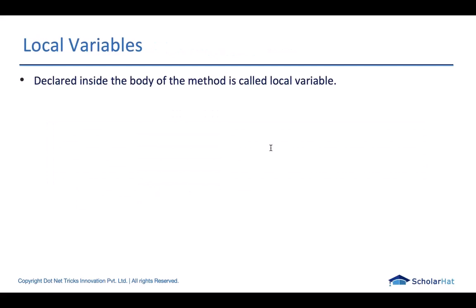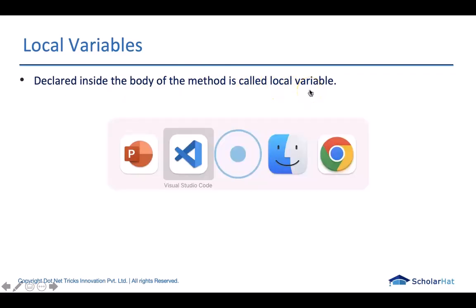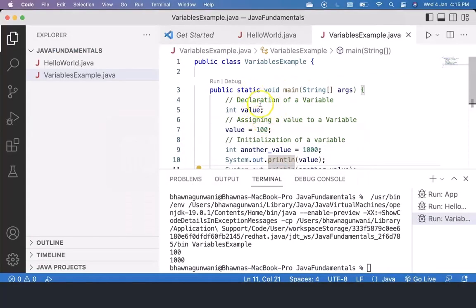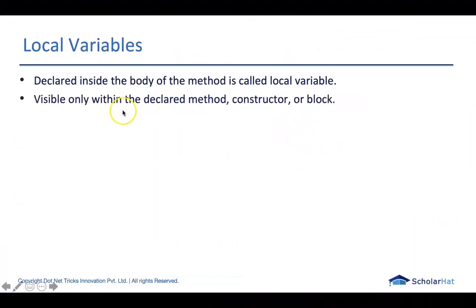We have different types of variables: local variable, instance variable, and static variable. This kind of variable is known as local variable because they are declared inside the body of the method. Here this variable is declared within the main method, so their scope will also be within the main method only. When we declare a variable within a particular body, that body can be a method, constructor, or block. So that variable can be used within that particular constructor, method, or block. Those cannot be accessible from anywhere in the program.